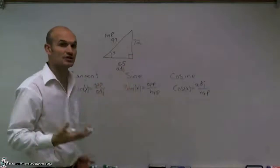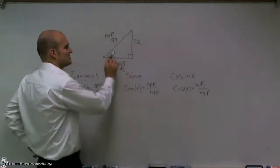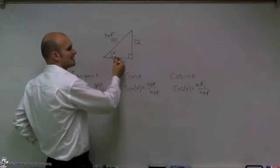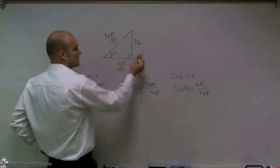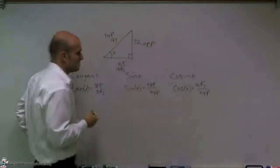Therefore, by process of elimination, or one way to always look at it is your opposite is always the side length that's opposite of your original angle. So 72 is going to be my opposite.